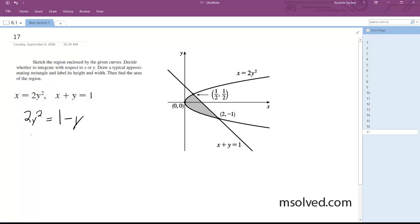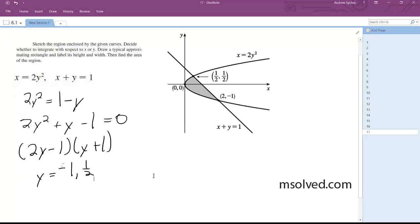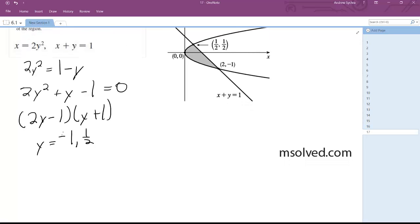It's something you may not think of offhand, but when we have this we'll have 2y squared plus y minus 1 equals 0. We get 2y minus 1 times y plus 1, so we get y is equal to negative 1 and 1 half. So those are intersection points and you can see from the graph up here that's what matches up.